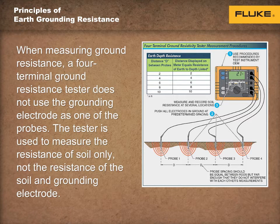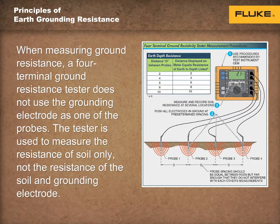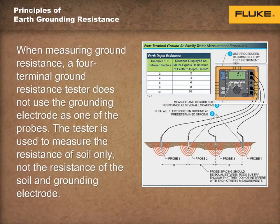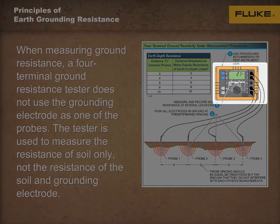A soil resistivity test is performed to determine the best type of grounding system to be used, which could include an electrode, a grid, a loop, or a plate. Testing the resistivity of soil requires a test instrument, such as a four-terminal ground resistance tester. The test instrument system involves four metal probes that are driven into the earth, connecting conductors long enough to connect the probes back to the meter, a tape measure, a calculator, and paper and pencils.